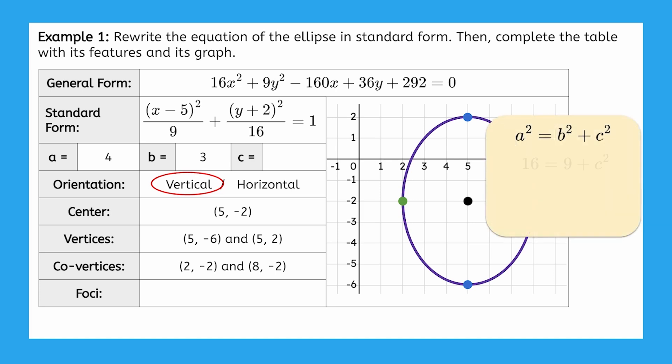Lastly, we use a and b to find c, which is equal to square root of 7.